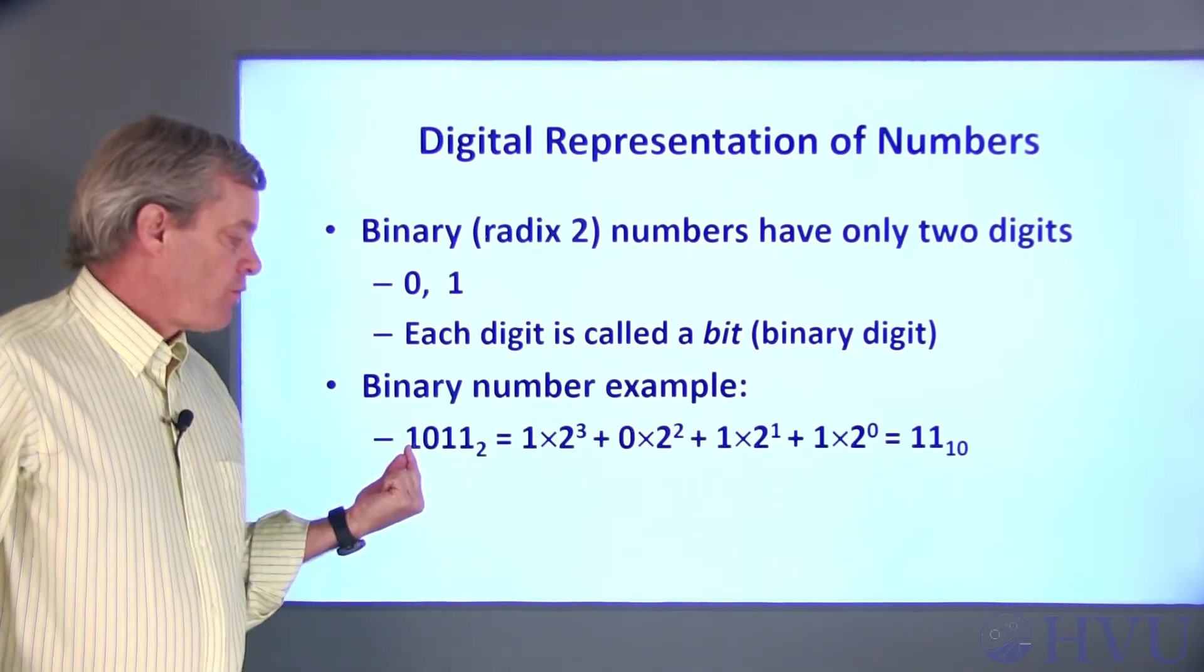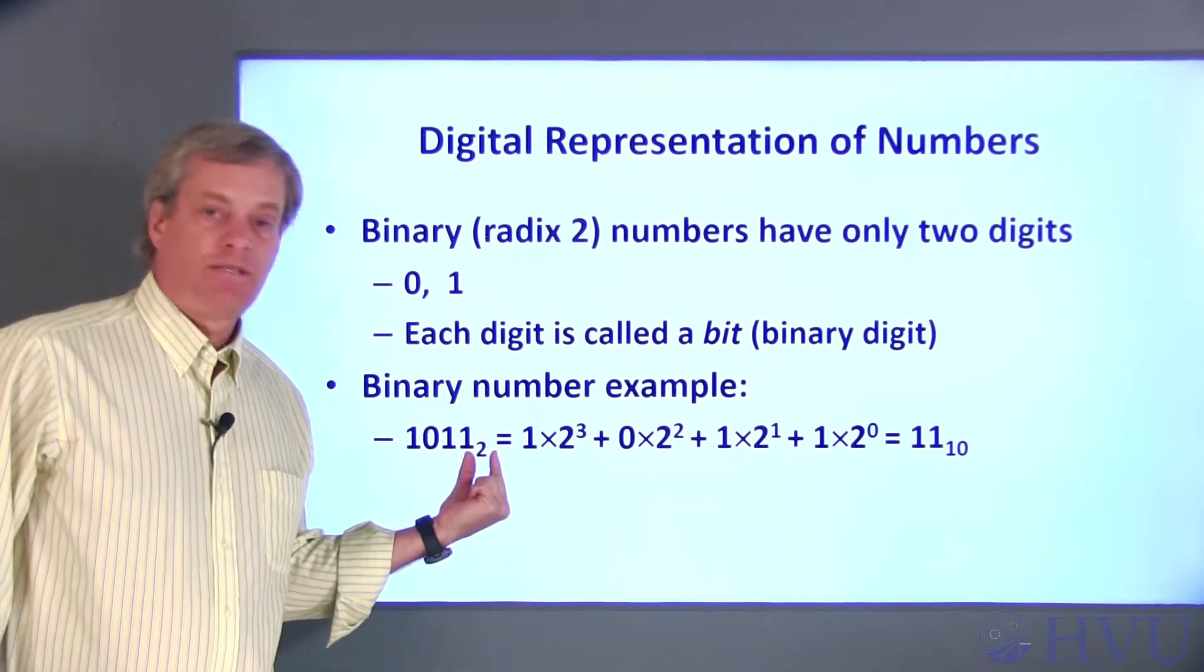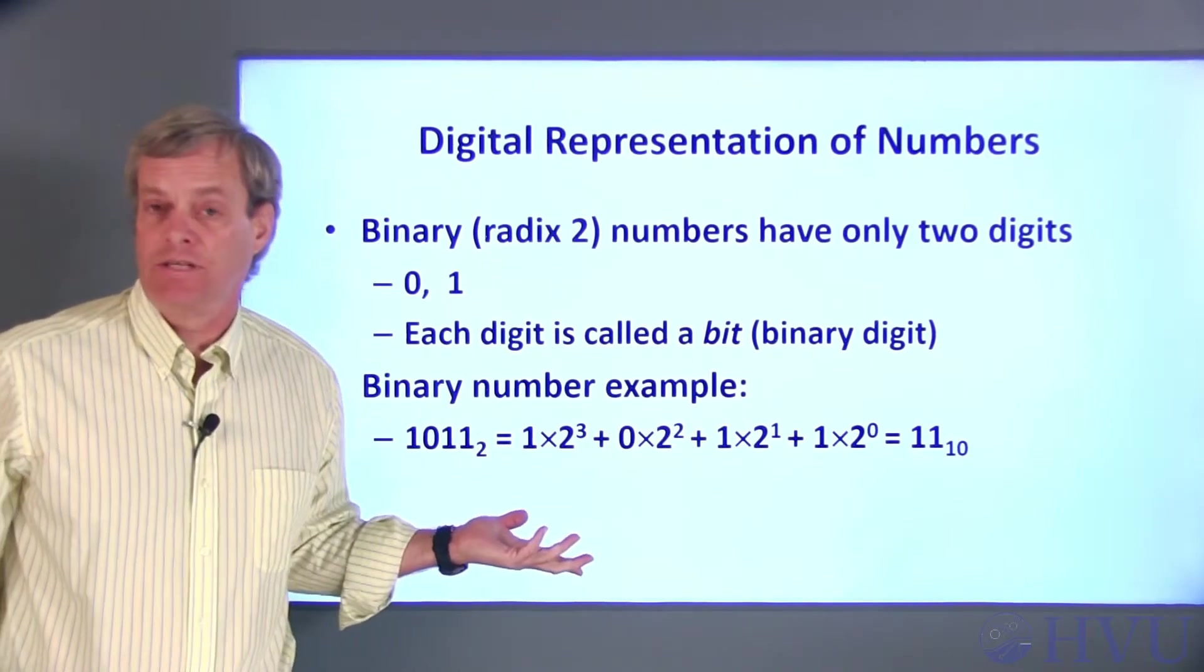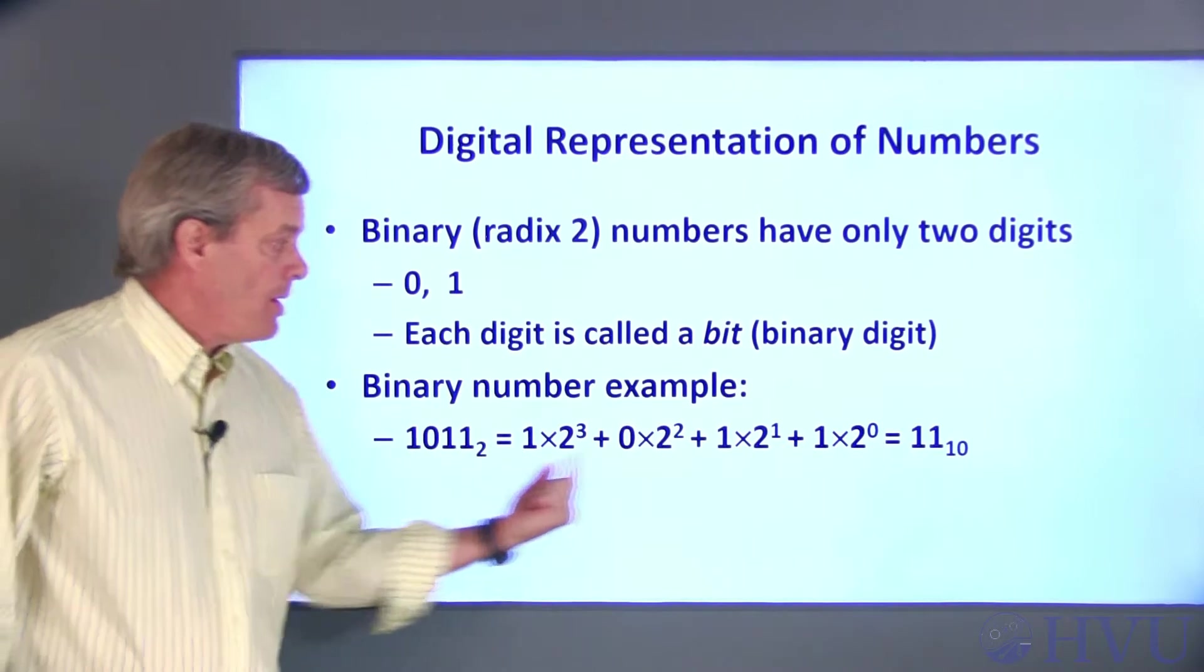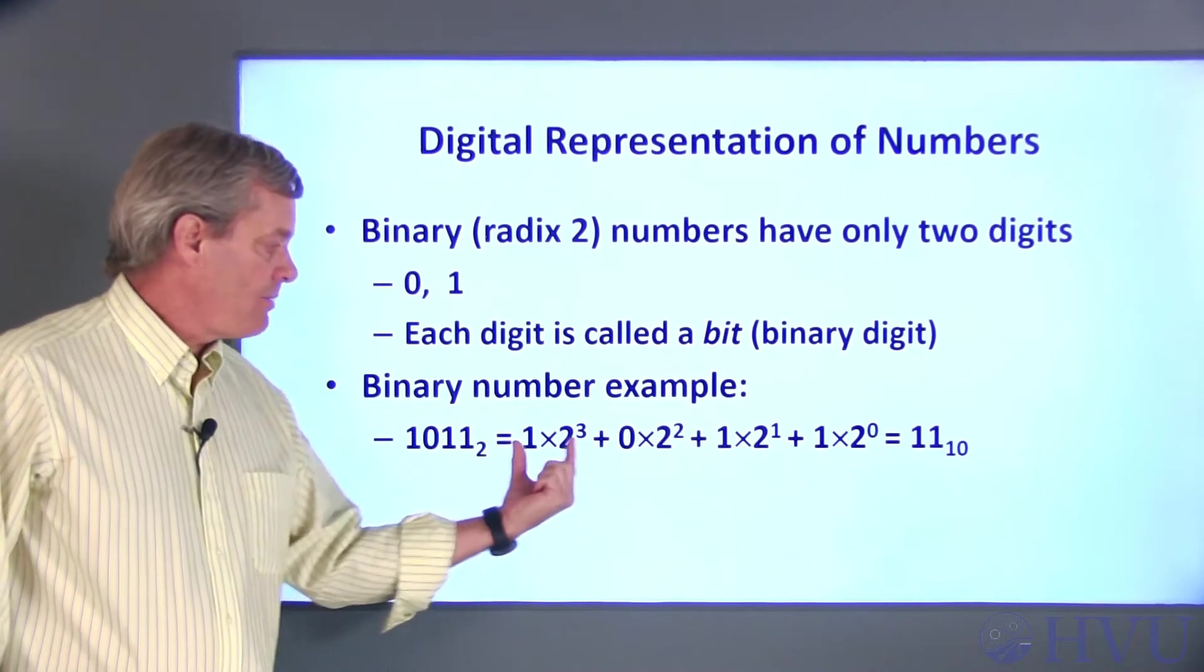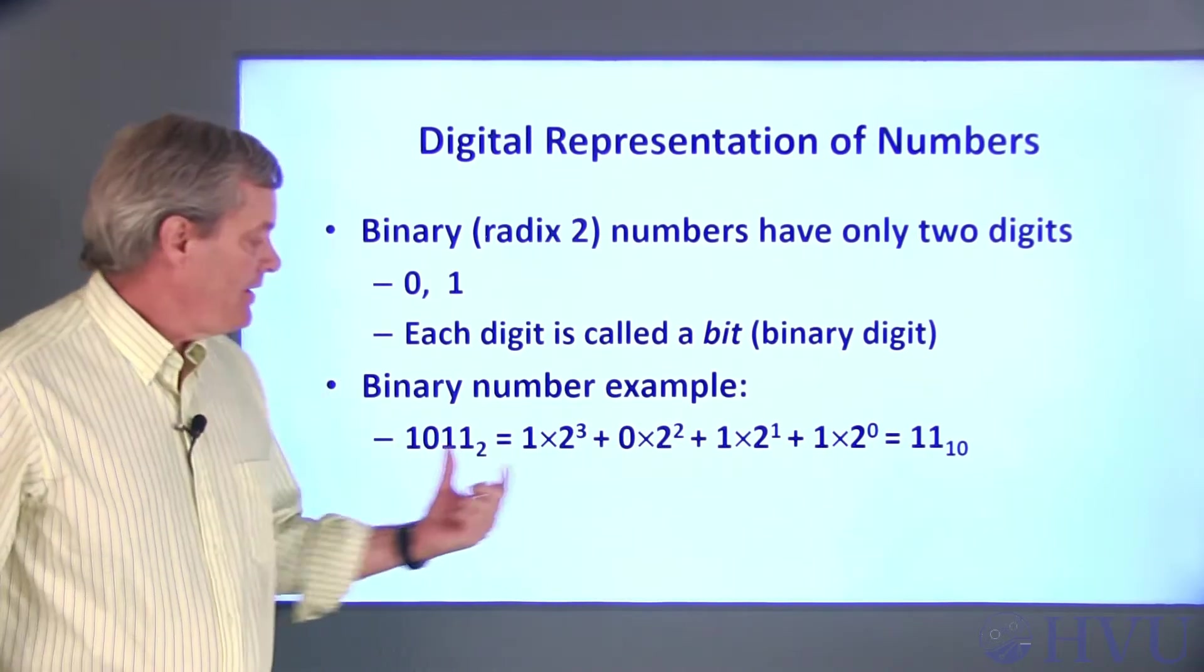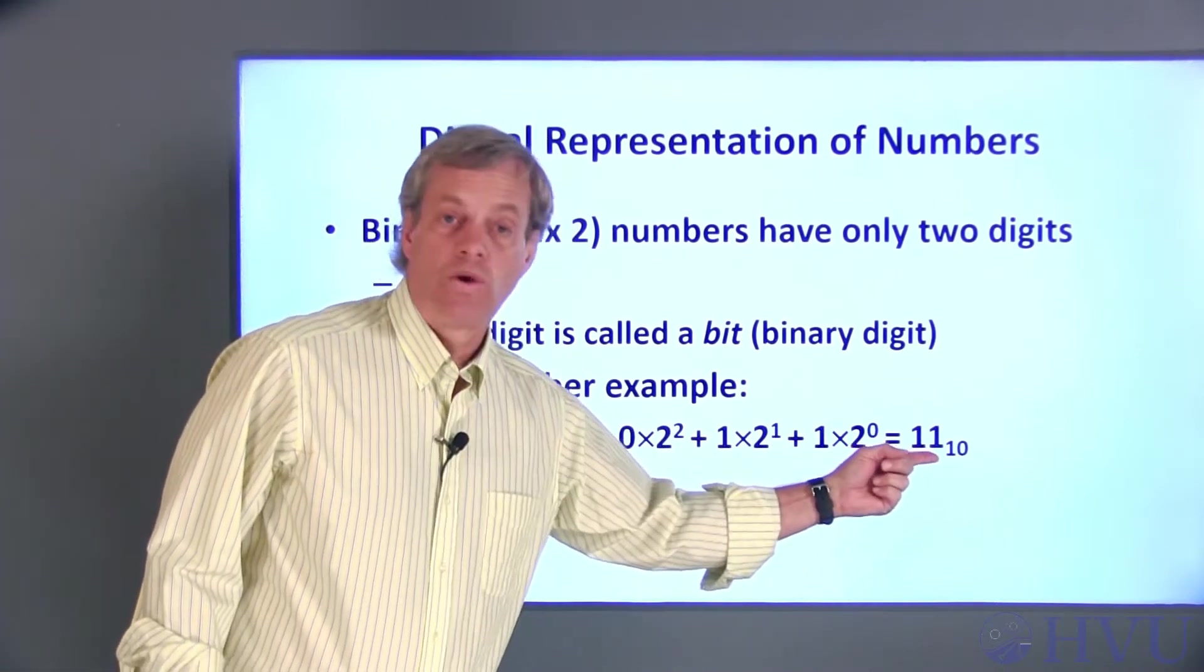As an example, the number 1011 in base 2, this subscript here is used to denote the radix of a number if there's any possibility of confusion, is 1 times 2 to the zeroth, plus 1 times 2 to the first, which is this position, plus 0 times 2 squared plus 1 times 2 cubed. In base 10, this is 8 plus 0 plus 2 plus 1, or 11.